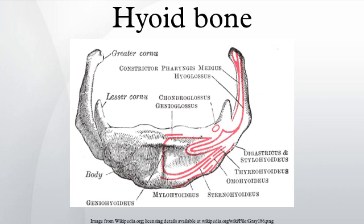Due to its position, the hyoid bone is not susceptible to easy fracture. In a suspected case of murder, a fractured hyoid strongly indicates throttling or strangulation in an adult. However, this is not necessarily the case in children and adolescents, where the hyoid bone is still flexible as ossification is yet to be completed.